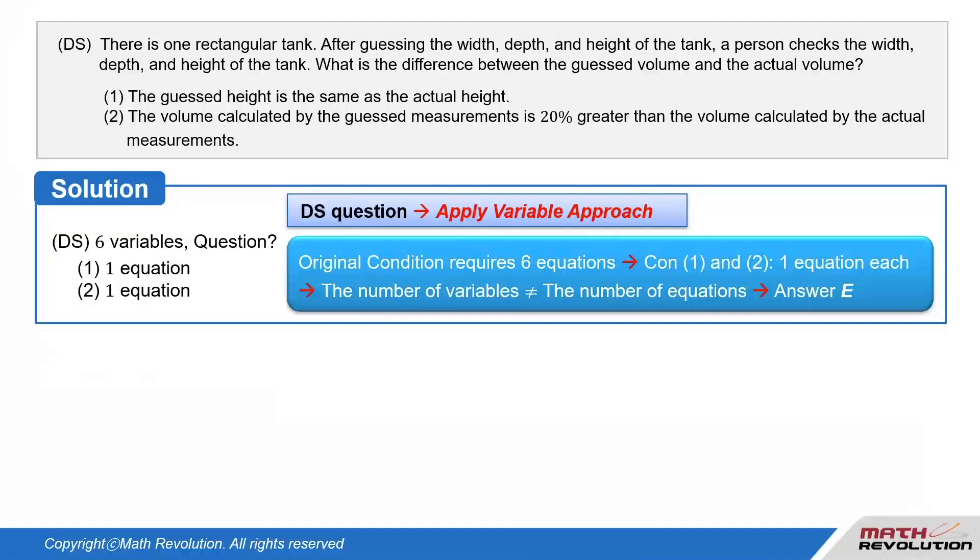DS question with six variables. This question shows how you get the answer E based on the variable approach by setting six variables in the original condition. Now, six variables would generally require six equations to allow us to solve for the variables. We know that each condition would usually give us an equation, resulting in a total of two equations, one each from condition 1 and condition 2.